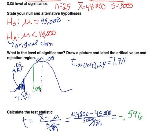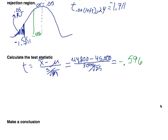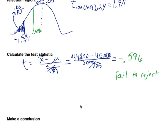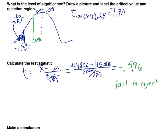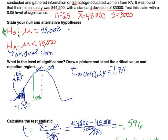We are at negative 0.596 — we are not in the rejection region. This means we fail to reject. We are failing to reject the null hypothesis. We cannot say there's enough evidence to reject it. There is no evidence to suggest that the population mean is less than $45,000.